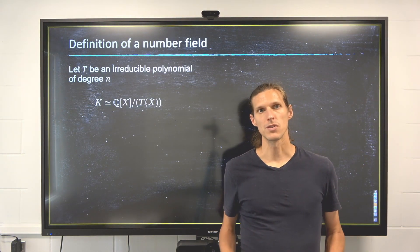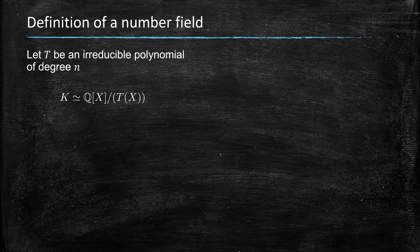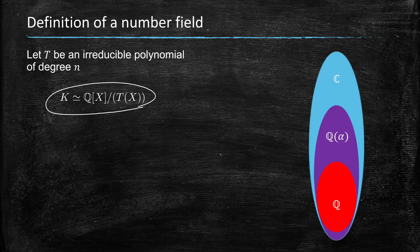What is the definition of a number field? It is a finite extension of the field of the rationals. What that means is that it can be written down as the quotient of Q of X by an irreducible polynomial of degree n.